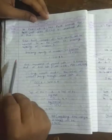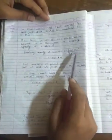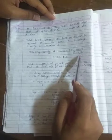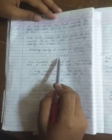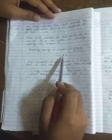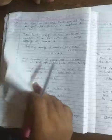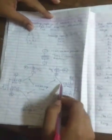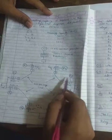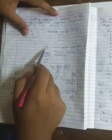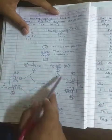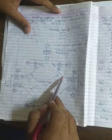For that, we find the breaking capacity of breaker phi. It is 3000 into 10 raised to 3 upon root 3 into 132 kV. The breaking capacity of circuit breaker phi is now found out as 13116 amps. And from the figure we can see, we have to create a fault over here, nearby relay phi.